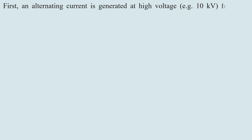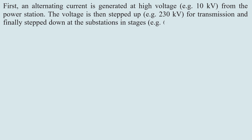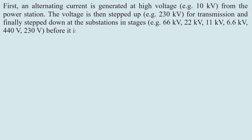First, an alternating current is generated at a high voltage — for example, 10 kV from the power station. The voltage is then stepped up, for example to 30 kV, for transmission, and finally stepped down at the substation in stages.